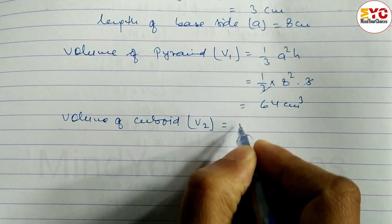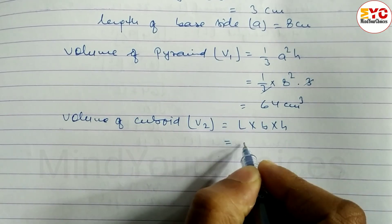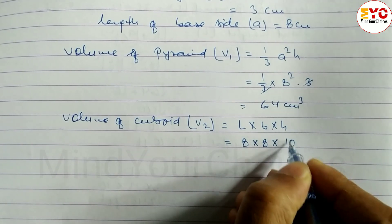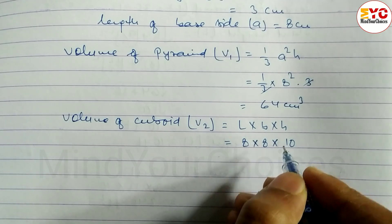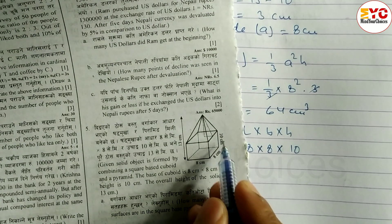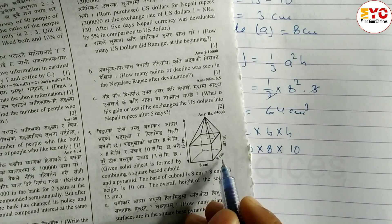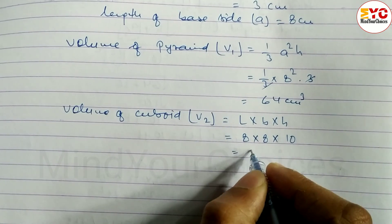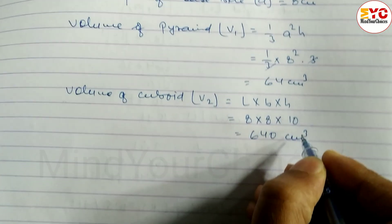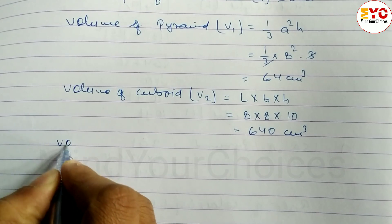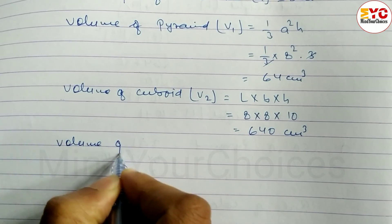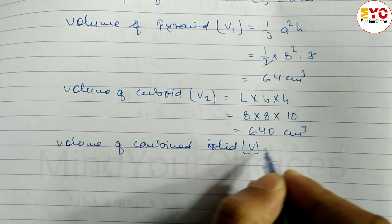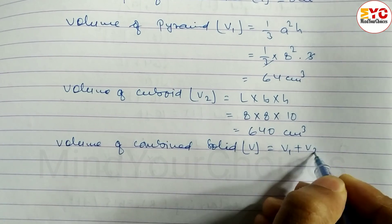Volume of cuboid V2 = length × breadth × height = 8 × 8 × 10 = 640 cm³. So the total volume of combined solid V = V1 + V2 = 64 + 640 = 704 cm³.